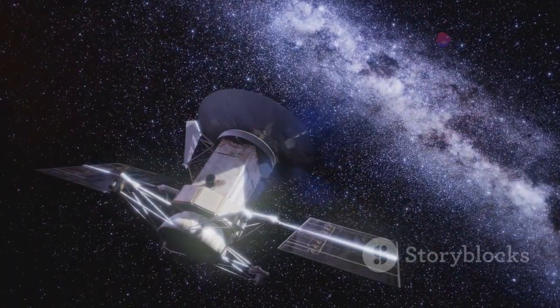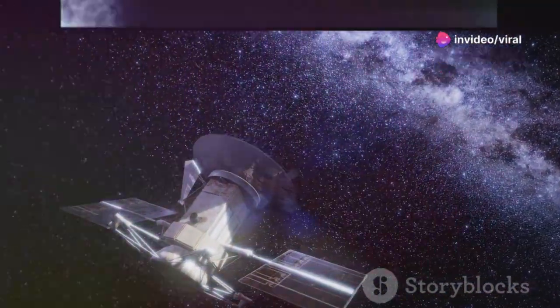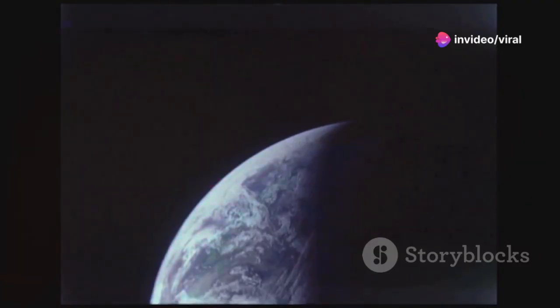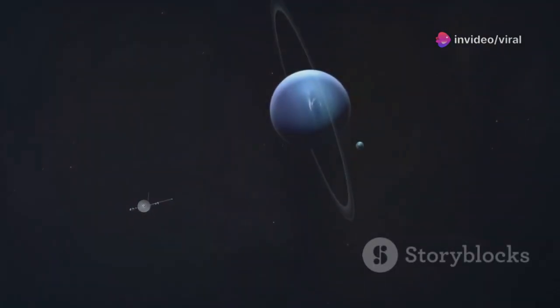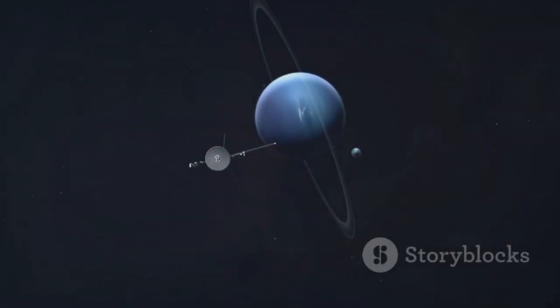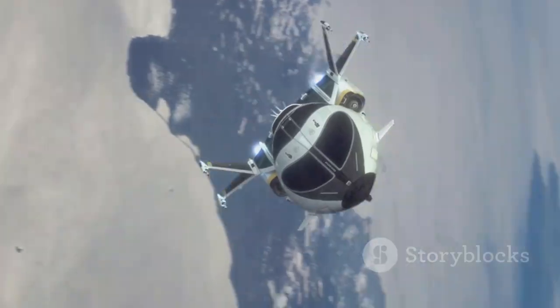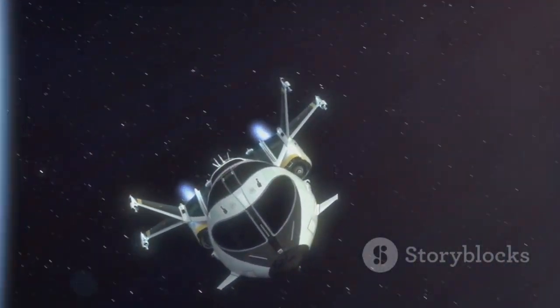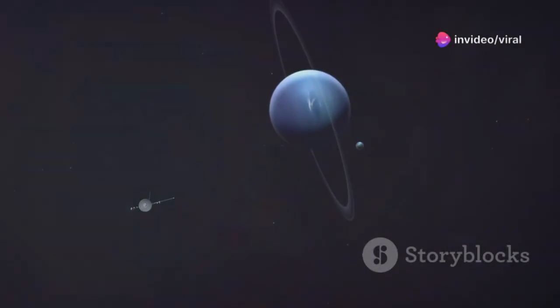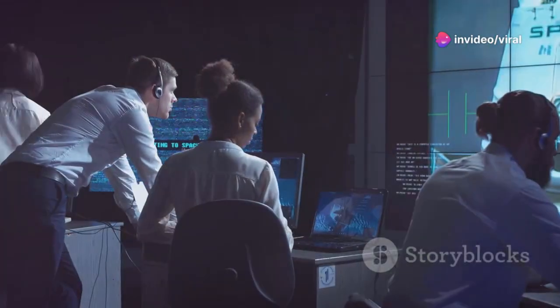The heliosphere is a vast bubble created by the Sun's solar wind, shielding our solar system from cosmic rays. Outside this bubble lies interstellar space, a thin soup of gas, dust and plasma crisscrossed by high-energy cosmic rays. These rays are dangerous, but our heliosphere deflects most of them, making life on Earth possible. Without this shield, radiation would threaten complex life.